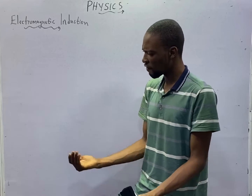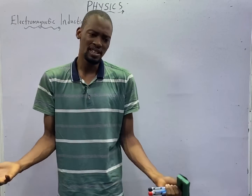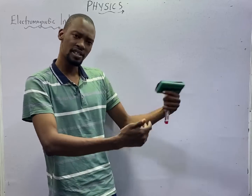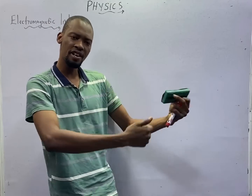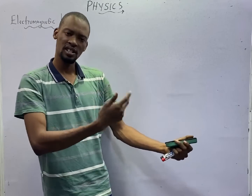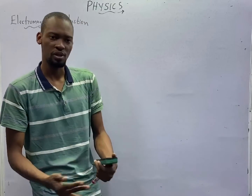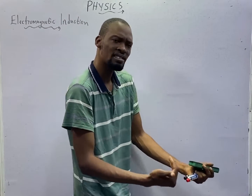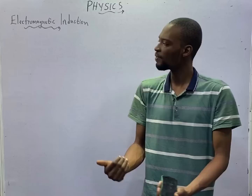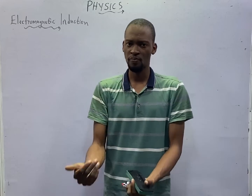The law of Faraday in summary says that when there is a varying magnetic field, current is likely going to be induced. And Lenz's law gave us the direction of this induced EMF.